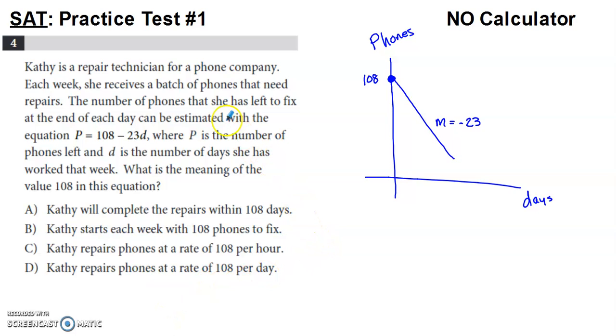So if we read this question, it says Kathy is a repair technician for a phone company. Each week, she receives a bunch of phones that need repairs. The number of phones that she has left to fix at the end of each day can be estimated with this equation. P is the number of phones left to be fixed, and d is the number of days she has worked that week. It says, what is the meaning of the value 108 within this equation?